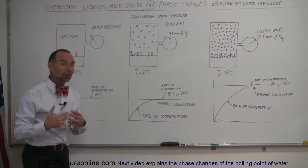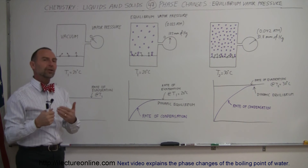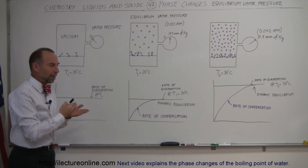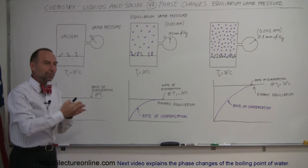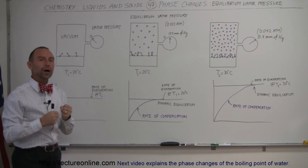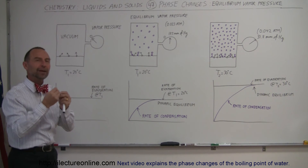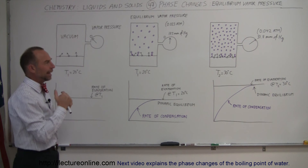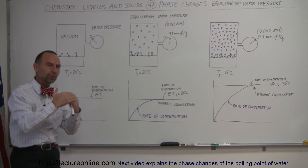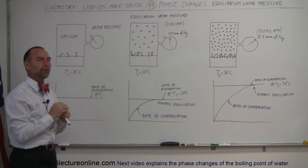There's a close connection to this and the amount of water that you can have in the atmosphere. As the atmospheric temperature increases, it can hold more water and it can have more vapor pressure. Except in the atmosphere, the vapor pressure will be the partial pressure of the total atmospheric pressure.